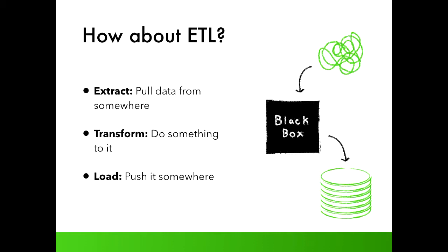ETL stands for extract, transform, load. At the top we have the extract step — we pull the data from somewhere and it's likely in a raw, unformatted structure. Then we transform it: we push it through a black box and perform a series of transformations, which could involve table joins, enrichments, or a variety of things. Finally, the output of that transformation is loaded — pushed somewhere. Simply put, the ETL process is: take some data, transform it, and push it somewhere else.